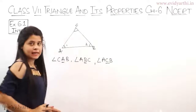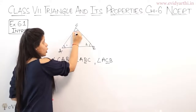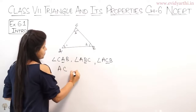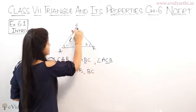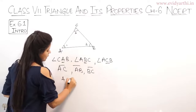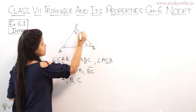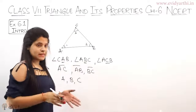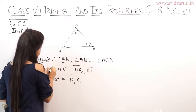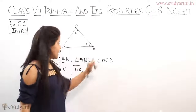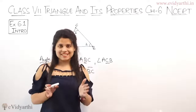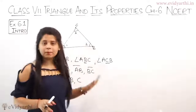The third angle is angle C, which can also be called BCA. So these are the three angles. The sides are AC, AB, and BC. And the points A, B, C are called vertices. If you are talking about one point, it is called a vertex — for example, vertex B. If you talk about all three, they are called vertices. So angles, sides, and vertices are the three main things in a triangle.